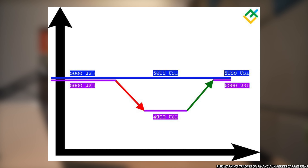Let's look at an example of a floating drawdown. Your account equity is, for example, $5,000 and you bought 10 Walt Disney shares at $400 each. Some time later, the share price fell and now they are trading at $390. Since you bought shares more expensive, you have a temporary drawdown of $10 per share. Thus, the temporary funds on the account are $4,900, while the balance is unchanged and equals $5,000. If the price reverses and starts rising, the drawdown will decrease.